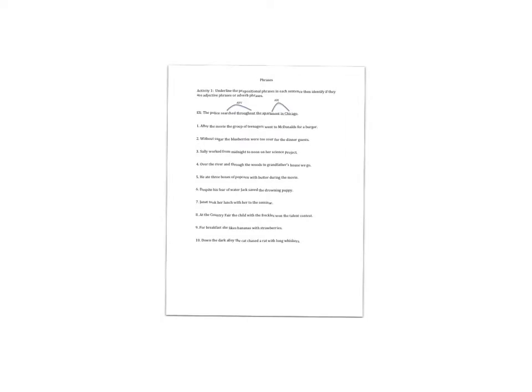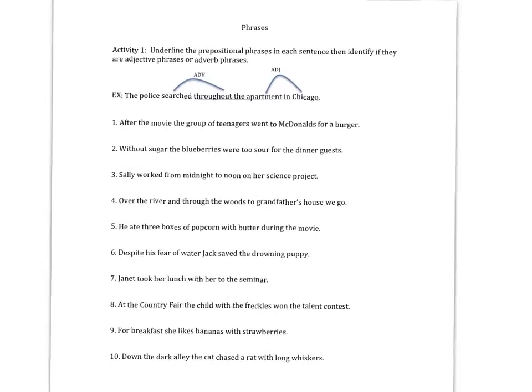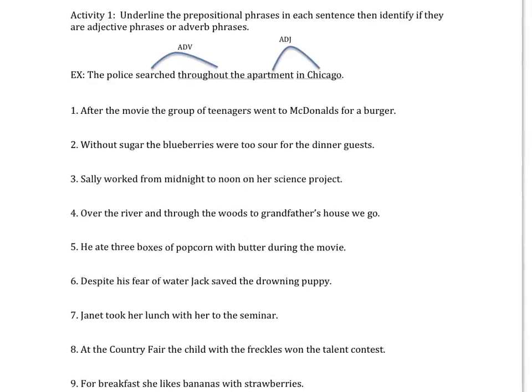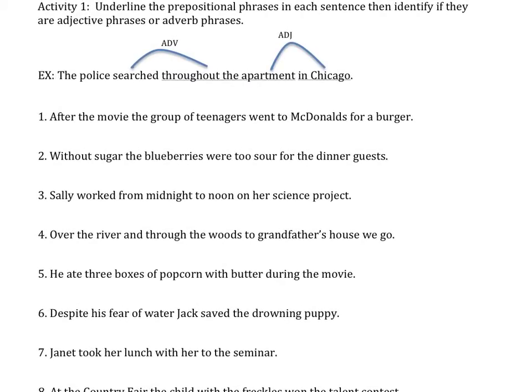All right, you finished the phrase worksheet, and now we are going to check your answers. Let's see how well you did. Start with page one, activity one. Again, what I've asked you to do here is underline the prepositional phrase, and then draw a line or an arrow, or somehow identify the word it modifies, while also labeling the part of speech it's functioning in.